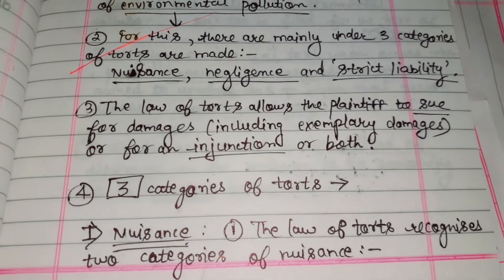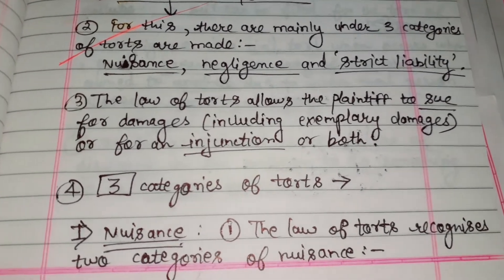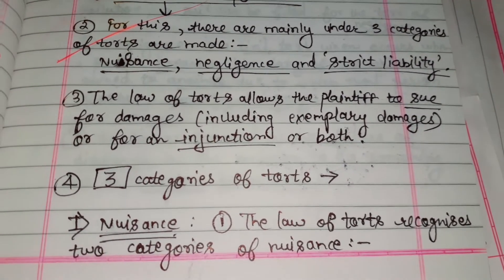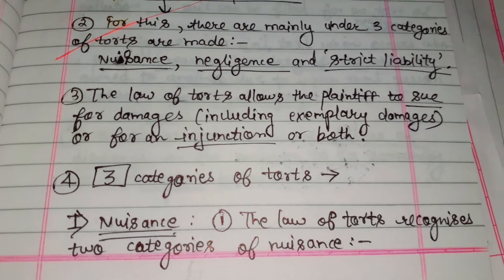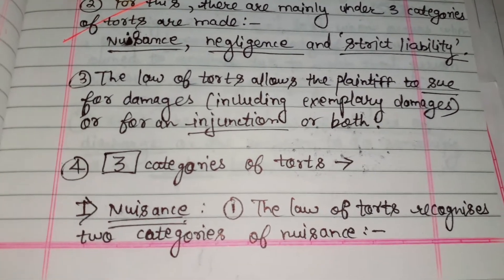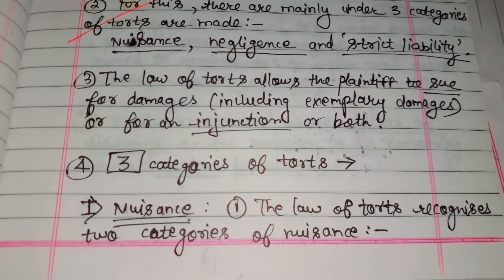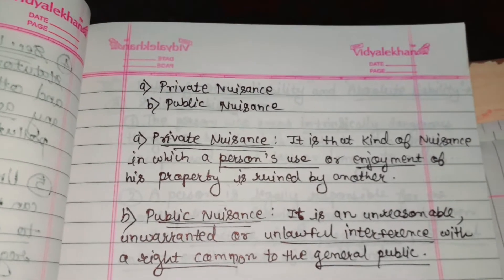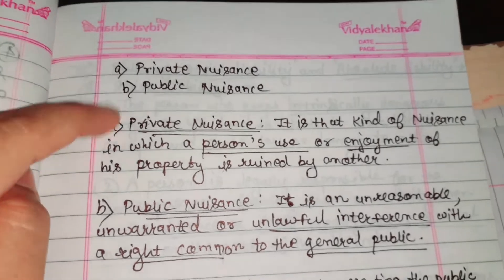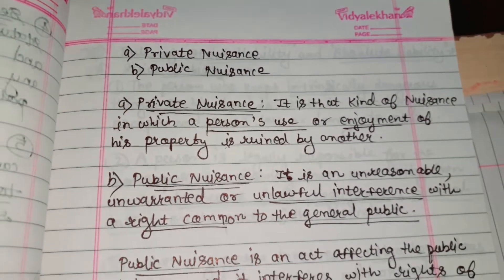In tort, the first category is nuisance. The law of tort recognizes two categories of nuisance: private nuisance and public nuisance.